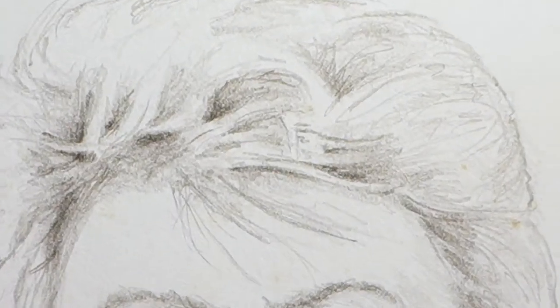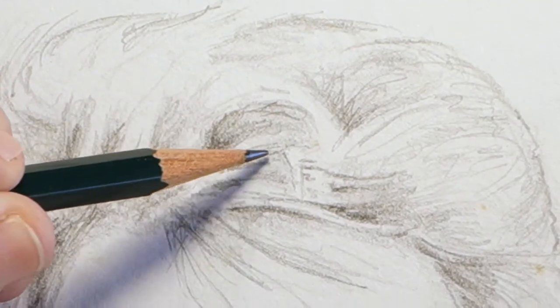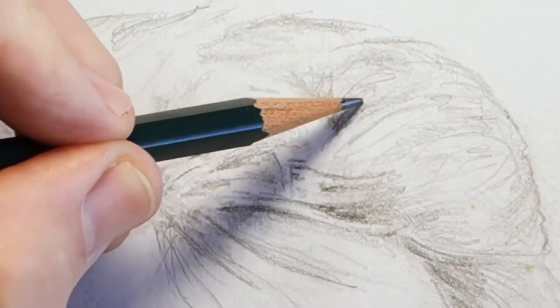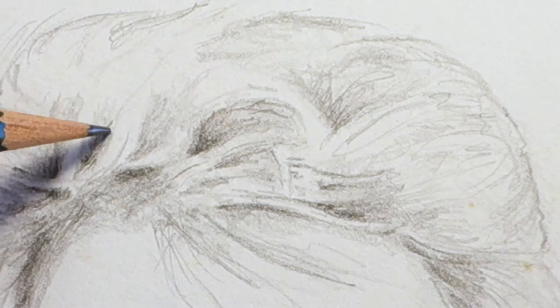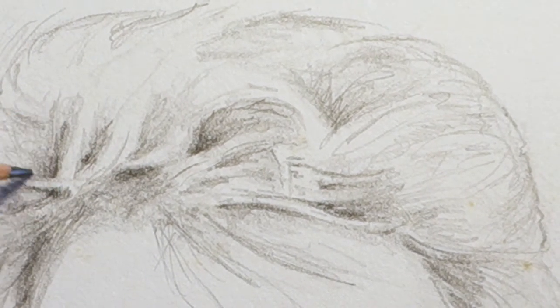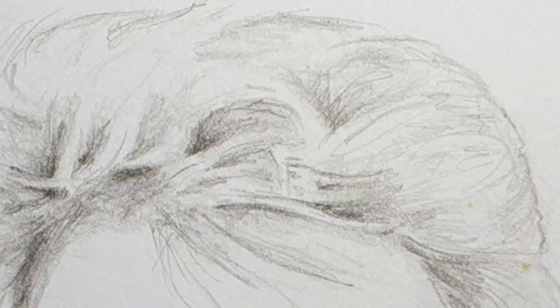For human hair, look for the way the hair clumps. Observe the shape of the shadow that the clump creates. And draw that. Make your long strokes follow the line of the hair.